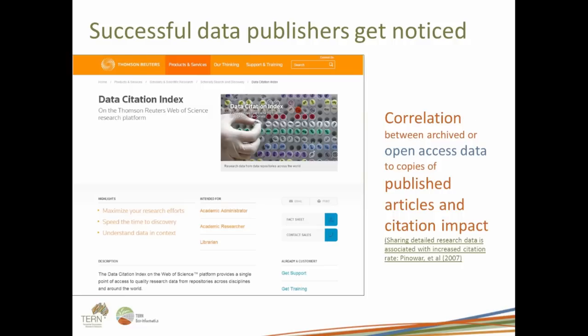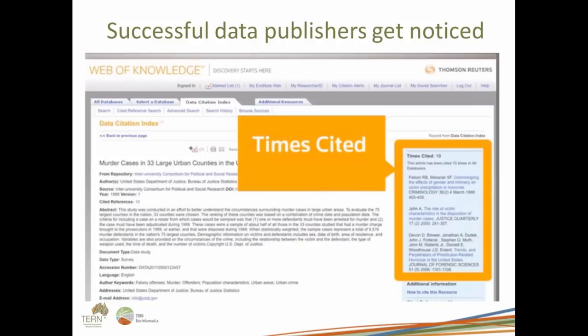In terms of getting noticed, there are other ways as well. There's now an ability to assess data citation impact via the Web of Science Data Citation Index. Though it's still early days as a tool, it's definitely helping us identify where our profile stands. There's been some really good work by Heather Piwowar who looked at the relationship between those who publish their data at the same time as they publish their papers, and found a strong correlation in citation impact when you do that. Once you find a dataset of interest in the index, it will show the number of times it's been cited and who has cited it.